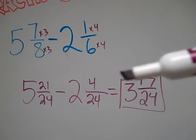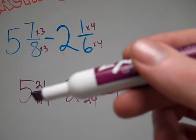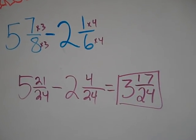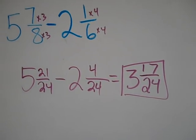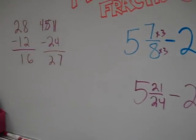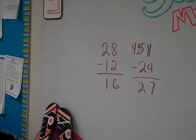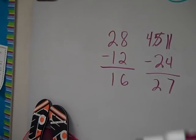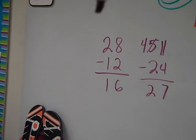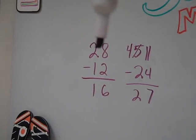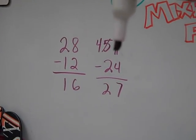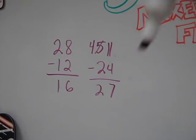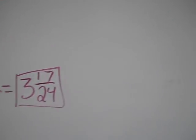Make common denominators, subtract the numerators, subtract the whole numbers. That's the first type of subtraction problem where you don't borrow. Let me show you what happens when you have to borrow.